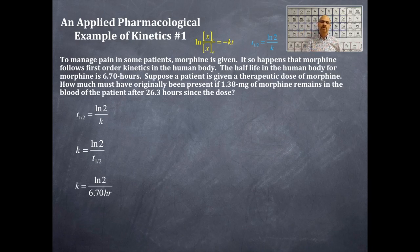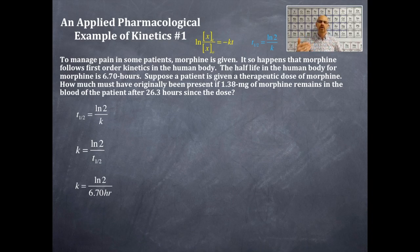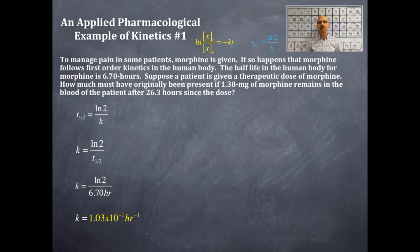k is equal to natural log of 2 divided by 6.70 hours. Take natural log of 2 in your calculator — that's 0.693 — then divide by 6.70. The result is in units of per hour. So k is equal to 1.03 times 10 to the negative 1 per hour. That's the rate constant for this first-order reaction.